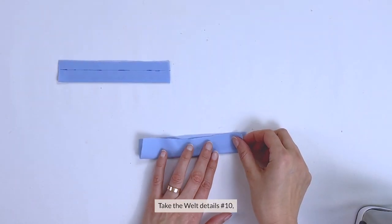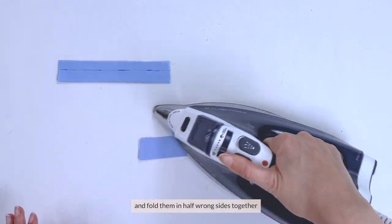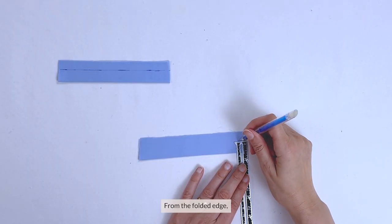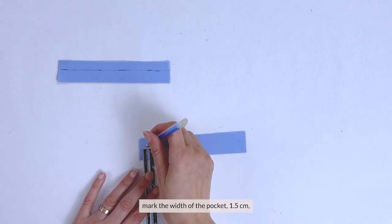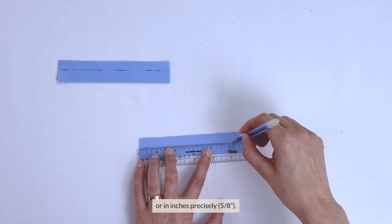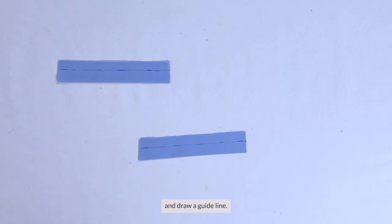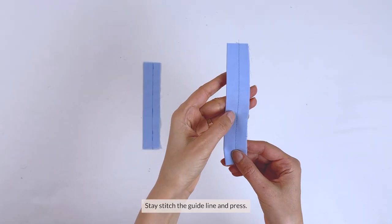Take the welt details, number 10, and fold them in half wrong sides together and press. From the folded edge, mark the width of the pocket, which is 1.5cm, or to be super precise in inches, and draw a guideline. Stay stitch the guideline and press.